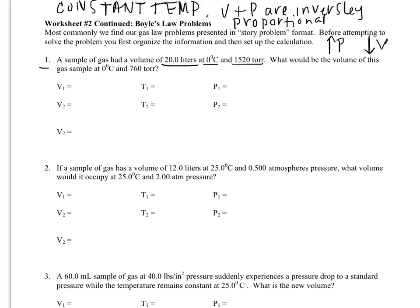So that means that so far they have told us that our starting volume is 20 liters, our starting temperature is 0 degrees Celsius, and our starting pressure is 1520 torr. Pulling the information from the problem, it wants to know what would the volume be when we get to still 0 degrees Celsius, so constant temperature.